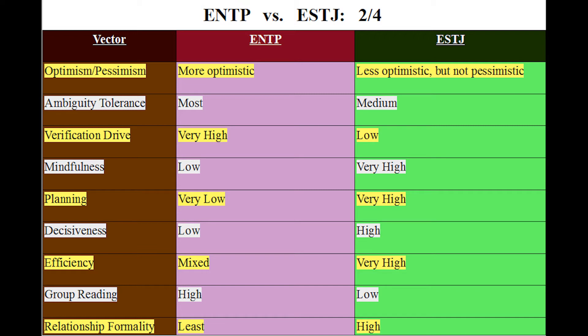For example, an ESTJ will check things and make sure — noticing it's springtime and moving something before snow melts. That verification drive also relates to mindfulness: verification drive is mindfulness inside your head, mindfulness is mindfulness outside your head. Planning: ENTPs very low, ESTJs very high. Decisiveness: ENTPs low, ESTJs high. Efficiency: ENTPs are mixed — we can be the most efficient by far when rolling, but completely inefficient when tasked with something specific.